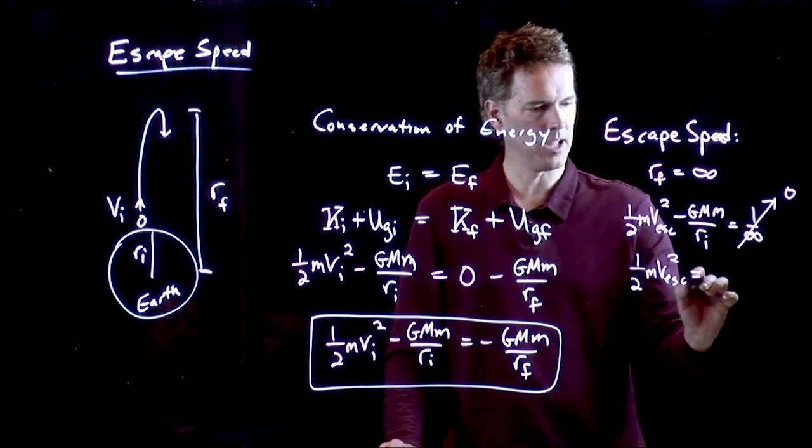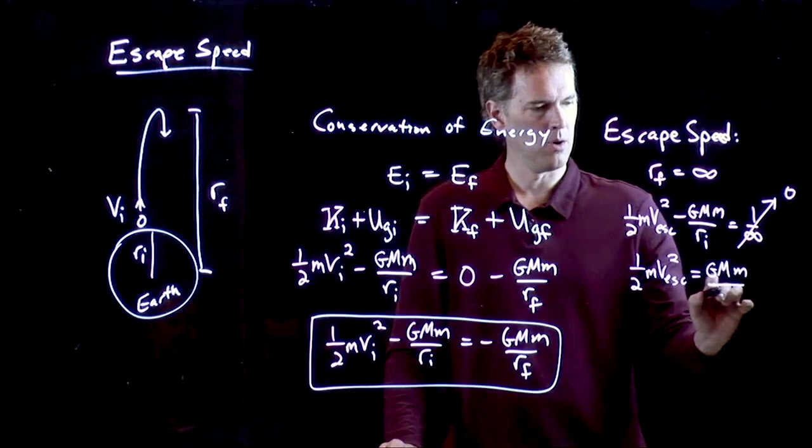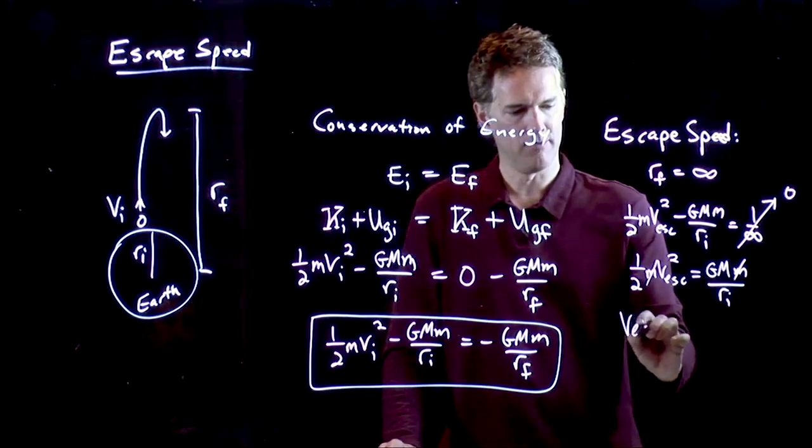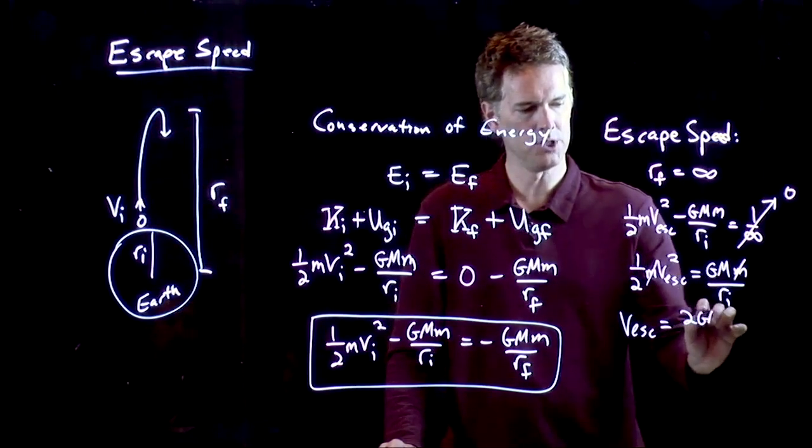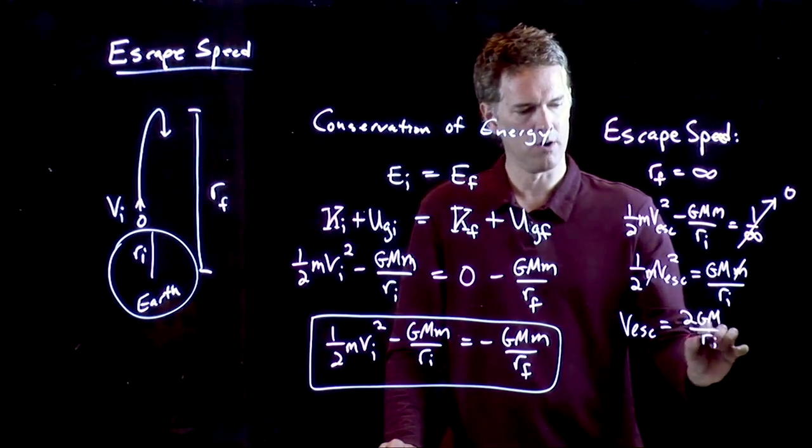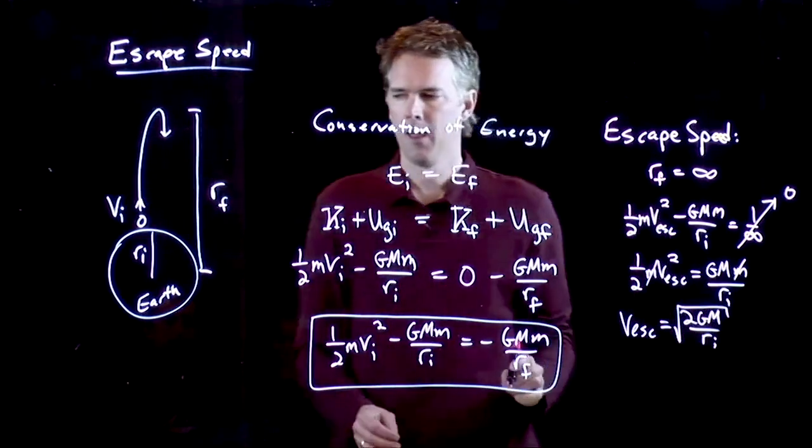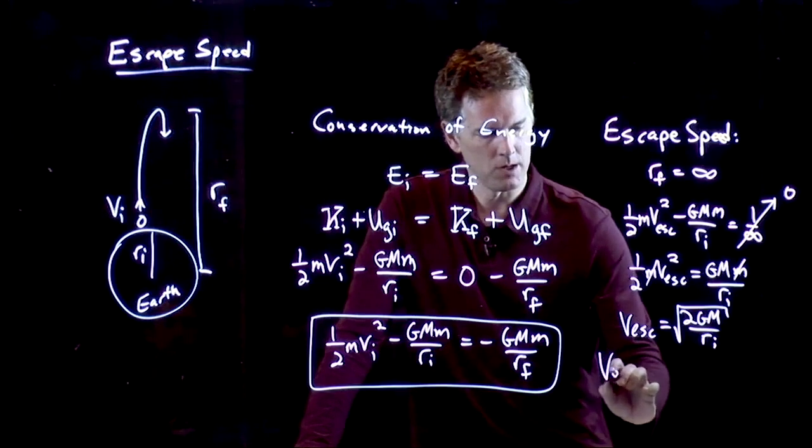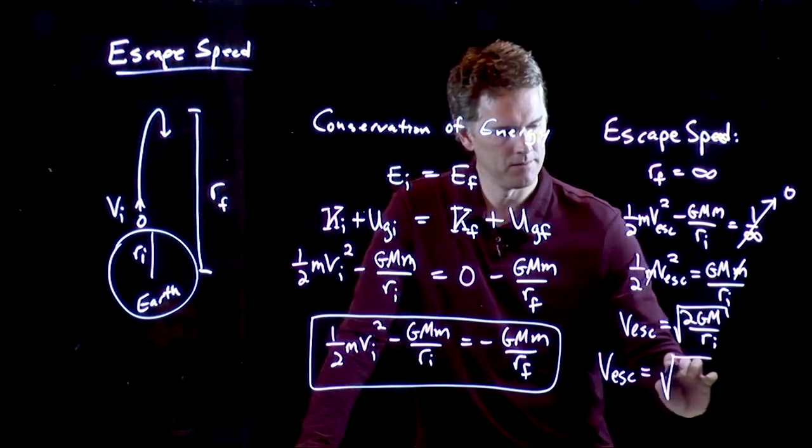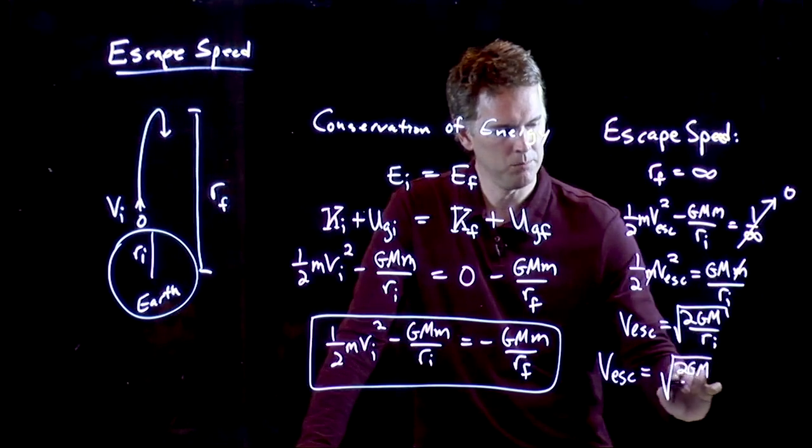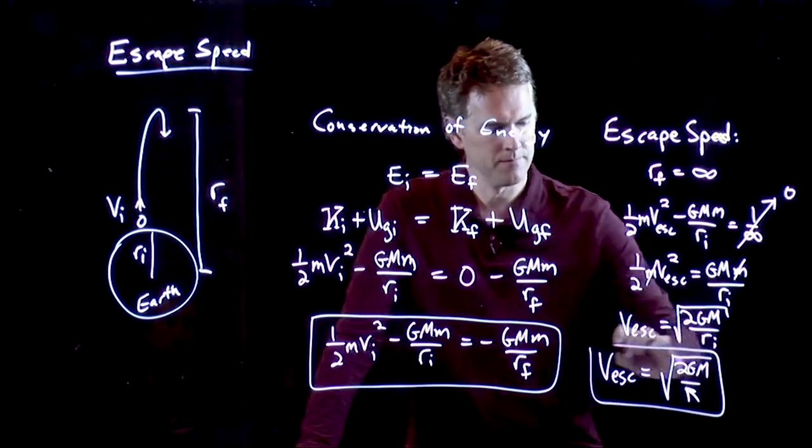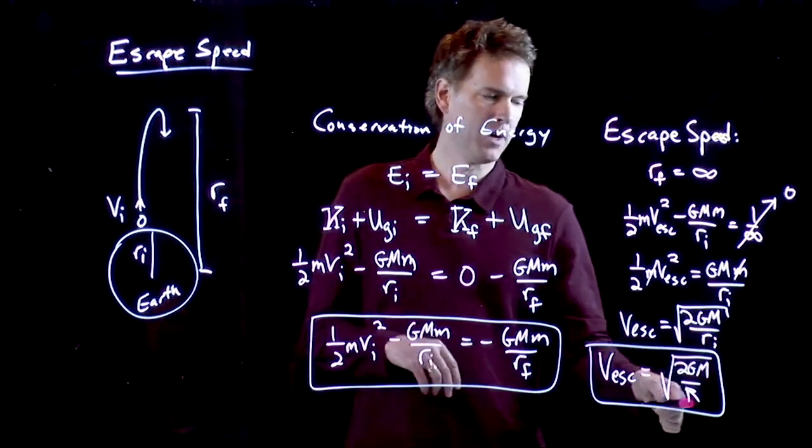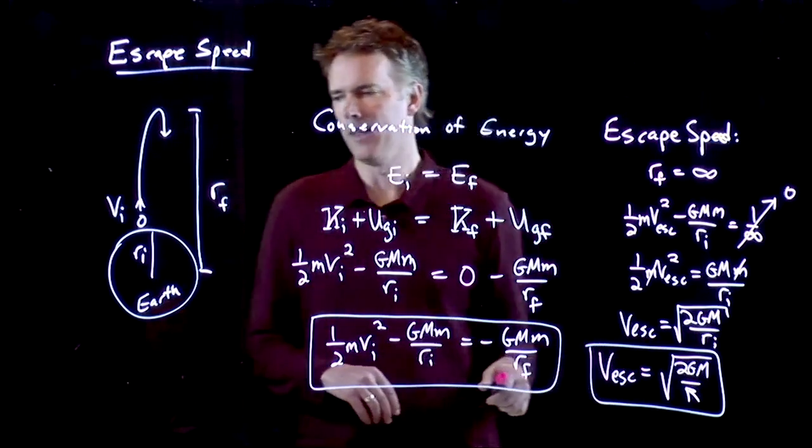One half M V escape squared equals GMM over RI. I cross out the M's, I multiply by two, and I get V escape equals two GM over RI. And I put a square root on it. And RI is the radius of the planet. And so in general, for any planet, what's the escape speed? It's this. Two times the gravitational constant times the mass of the planet divided by the radius of the planet. And then you take the square root of the whole thing.